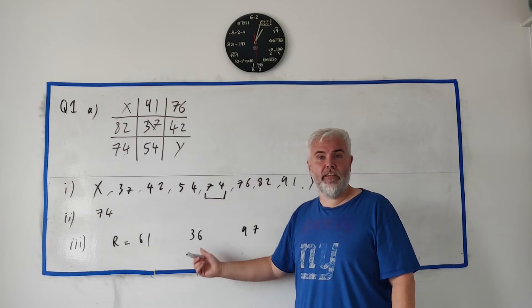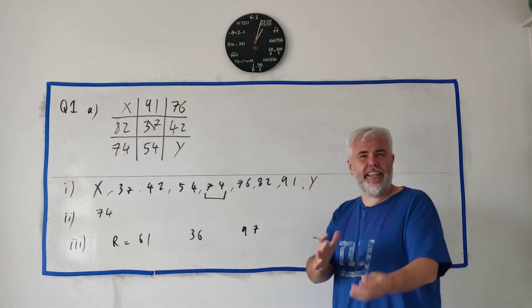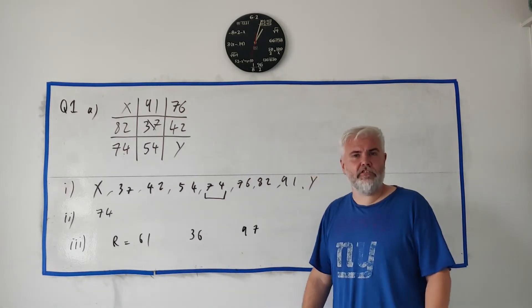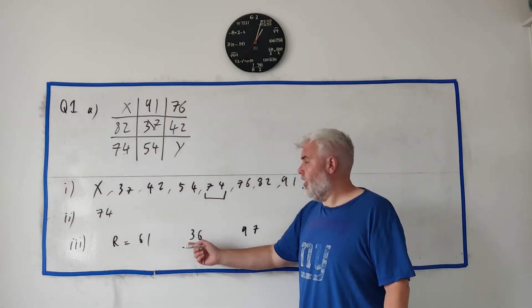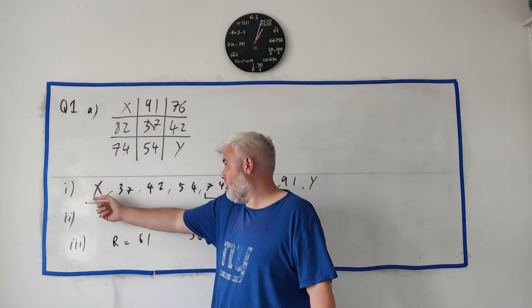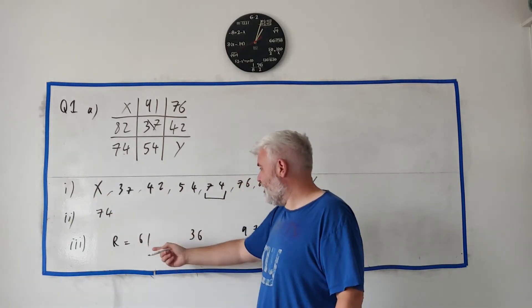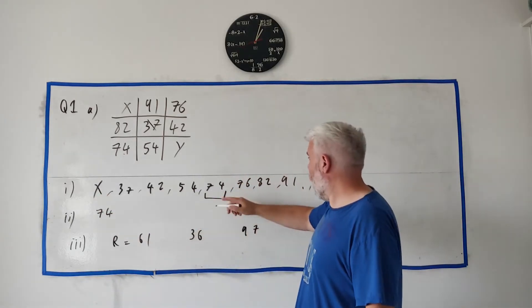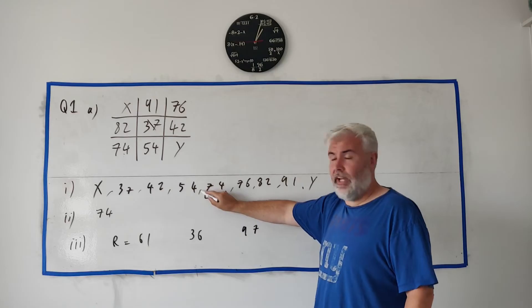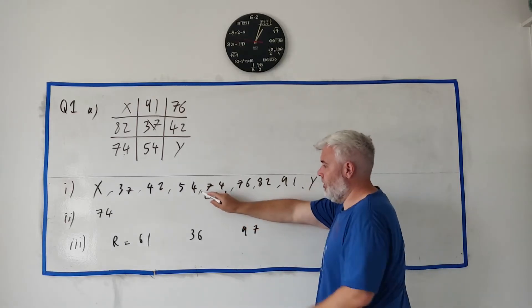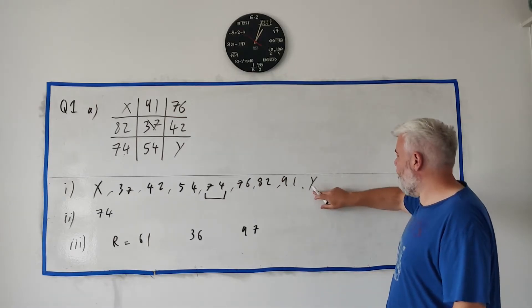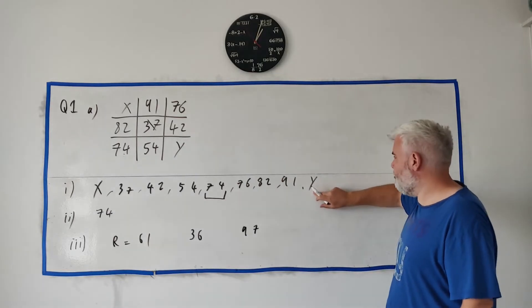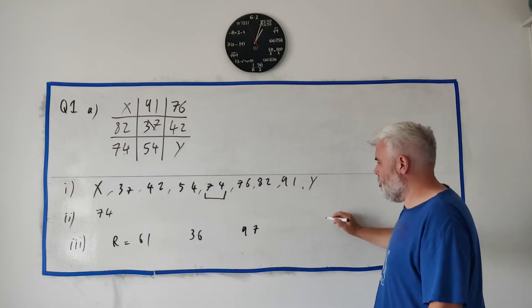The biggest number that X could be is 36. They didn't ask, but I thought I'd add in an extra question. What's the smallest number X could be? You might think it's 0. It could be 0. But 61 bigger than 0 would land up here somewhere. And Y cannot be 61. So what's the smallest number X could be? It's probably the smallest number Y could be.